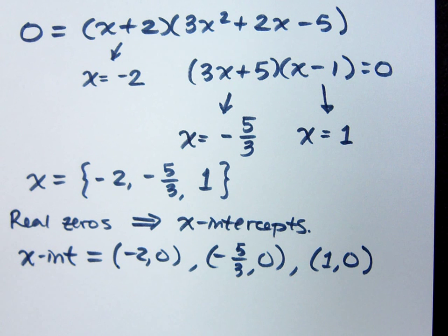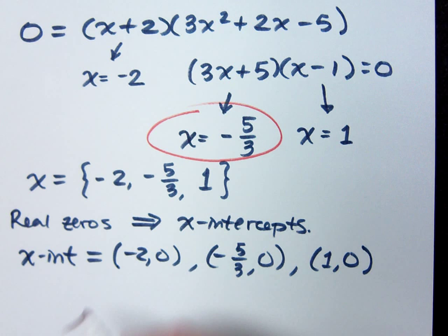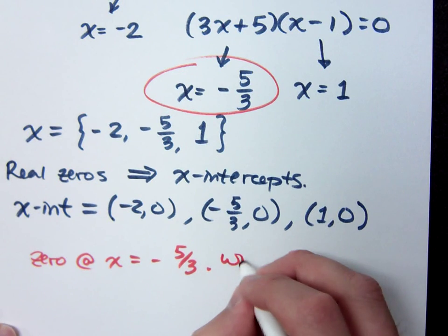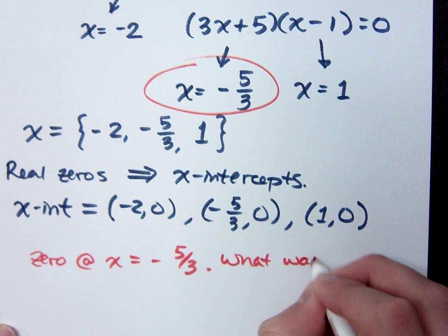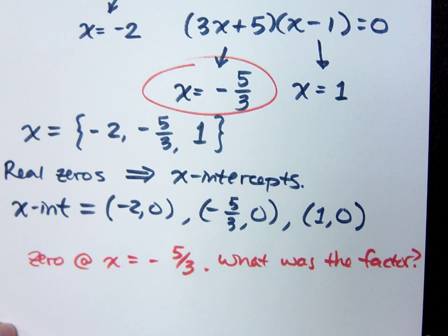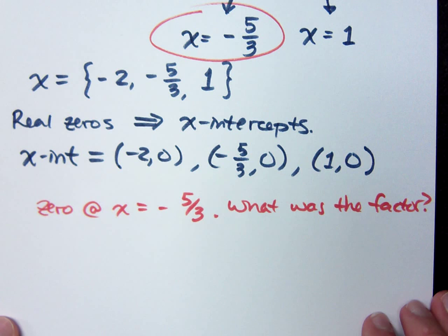Now, this is something that I did in 0310 for fun. And it kind of goes back to this, this negative 5 thirds. If I tell you that you have a zero at x equals negative 5 thirds, I may ask you this: What was the factor? Where did it come from? Well, we saw before that it came from 3x plus 5, but how do we backtrack to get there?